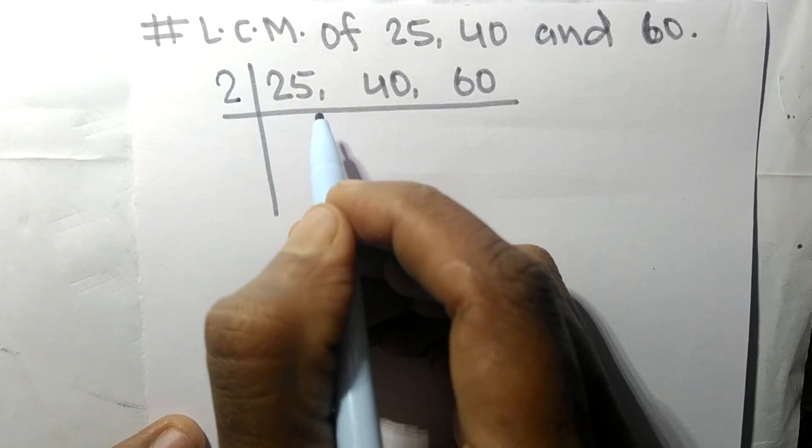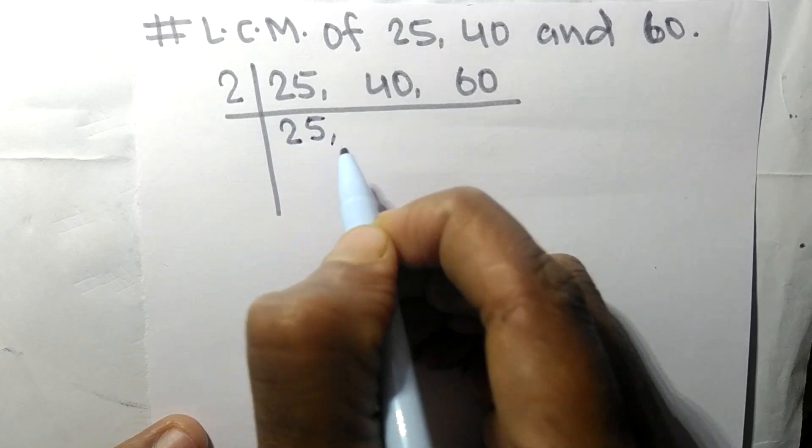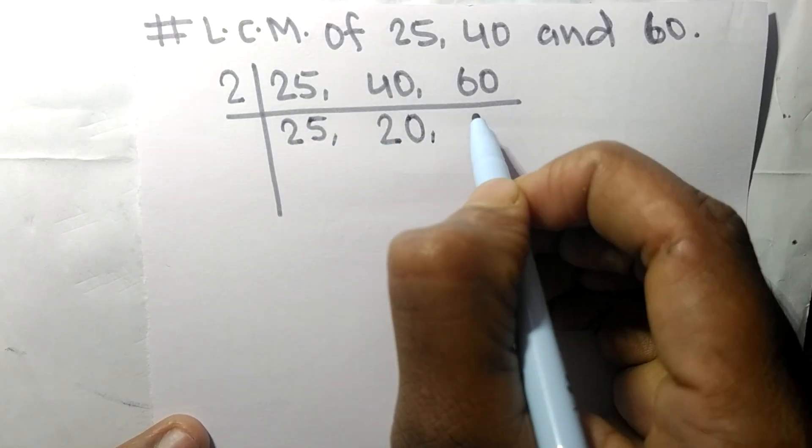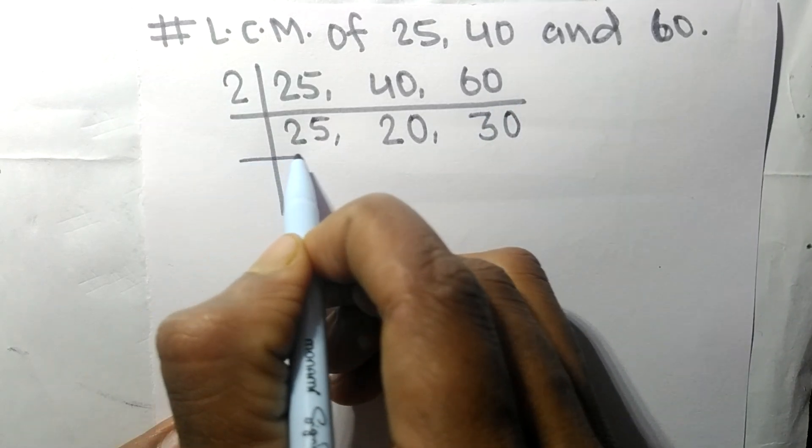25 not divisible so it is same. 2 times 20 mean 40, 2 times 30 mean 60.